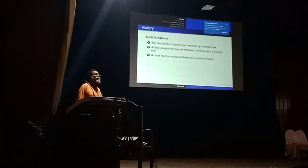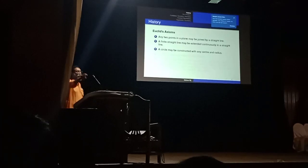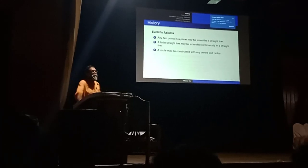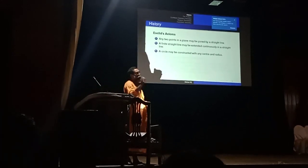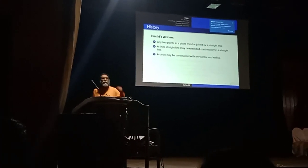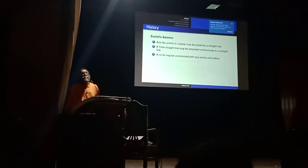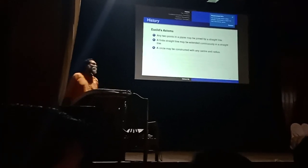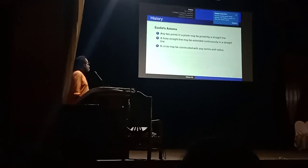The third axiom says what a circle is. Given a point and a given radius, the locus of points which are at that fixed distance from the initial fixed point has a name — it's called a circle.